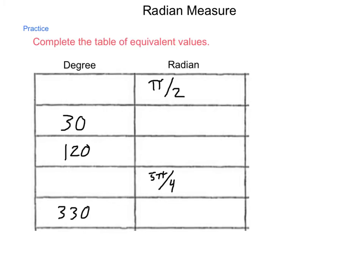Let's get some practice by completing a table of equivalent values — some have radian measurements, some have degrees, and we need to move back and forth. Let's start with radians. If I have π/2 radians, I need to multiply so that radians disappear. I put radians in the denominator: 180 degrees over π times π over 2. π divided by π is 1, and 180 divided by 2 is simply 90 degrees. So π/2 radians is 90 degrees.